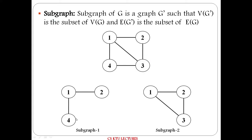This graph will have two different subgraphs. A given graph's vertices and edges are a subset of the original graph. The given graph has four vertices. Vertices 1, 2, and 4 form the first subgraph. This is the second subgraph.